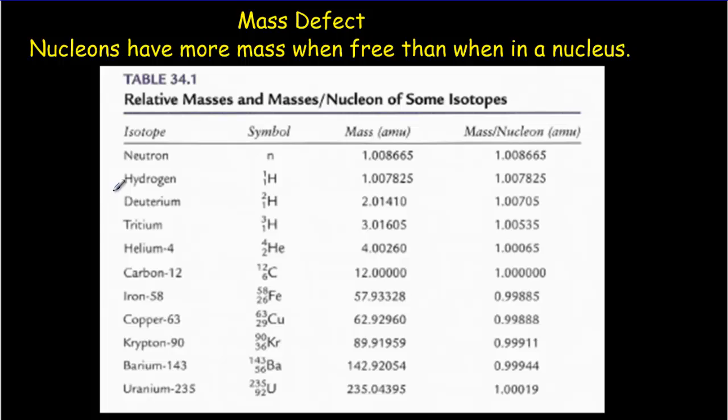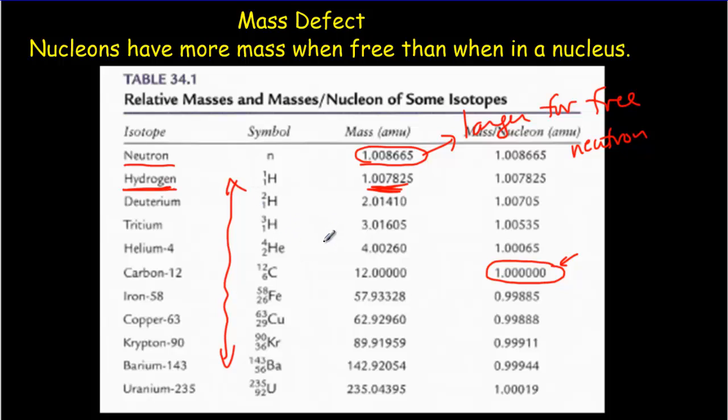If we take a closer look at that table, you'll notice here that a free neutron has a mass that's larger than the mass of the nucleons inside carbon-12. The protons as well have a larger mass when they're free than they do inside a carbon-12. In fact, all of the different atoms have a different mass per nucleon. It basically depends on how big that particular nuclei is.